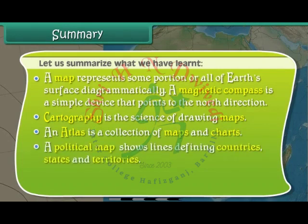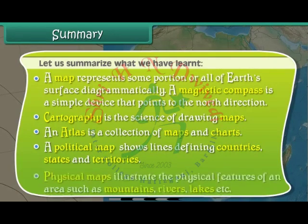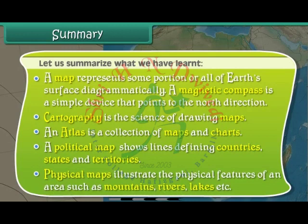A political map shows lines defining countries, states and territories. Physical maps illustrate the physical features of an area such as mountains, rivers, lakes, etc.